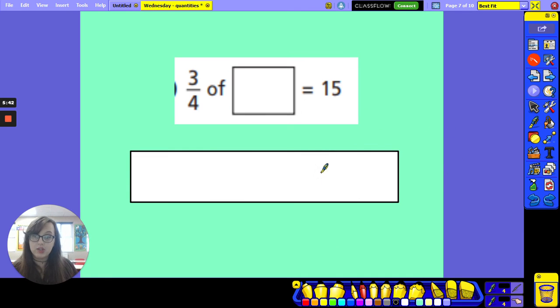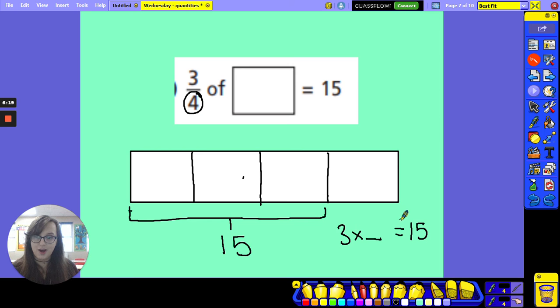Now I've got a similar question. Three quarters of something is fifteen. This time, I'm working with quarters. So what should I split my bar model into? Hopefully you know it's quarters. So let's split our bar model into quarters. We can see that three quarters is worth fifteen. So let's highlight our three quarters. That's worth fifteen. So if these three together are worth fifteen, what's each one worth? Three lots of what make fifteen. Hopefully we know this is related to our last one.